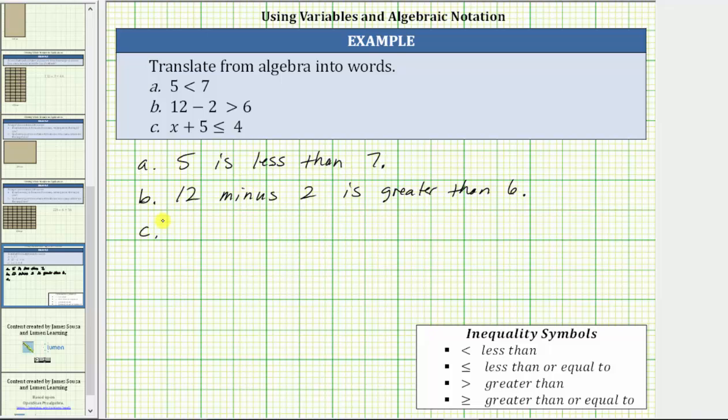And then for part C, again, we can express this sum several ways. We can say x plus five is less than or equal to four. We can say x increased by five is less than or equal to four, or five more than x is less than or equal to four, as well as the sum of x and five is less than or equal to four. Let's just write x plus five is less than or equal to four.